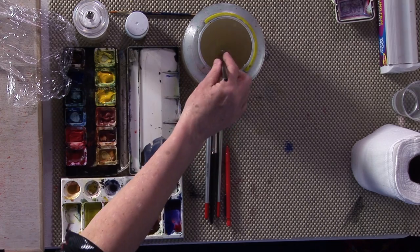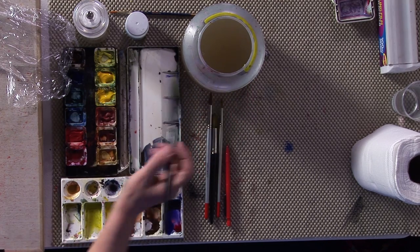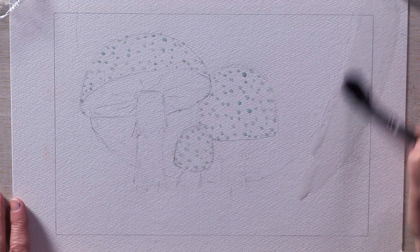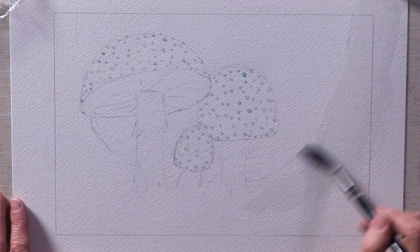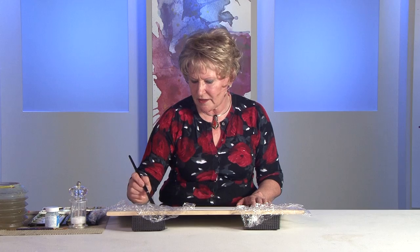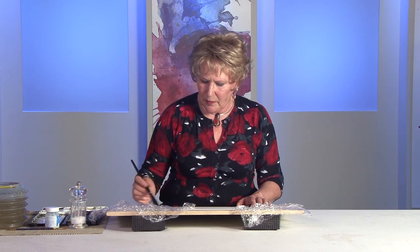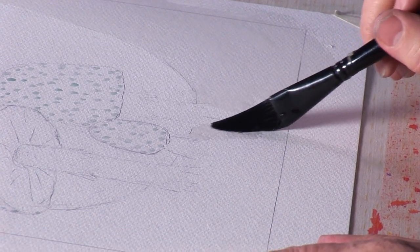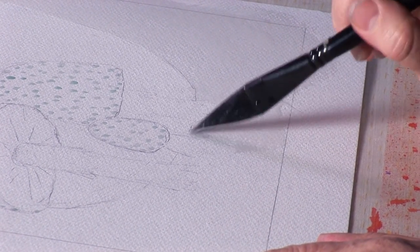So I'm going to start off by wetting the area I want to work in now. So nice and wet using a nice big mop brush, plenty of water. I'm using Bockingford paper which stays nice and wet for quite a long time. So we need to keep it glossy wet at this stage.